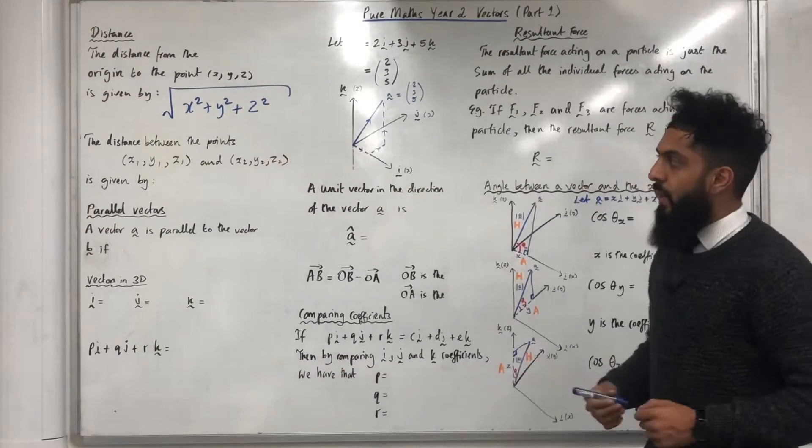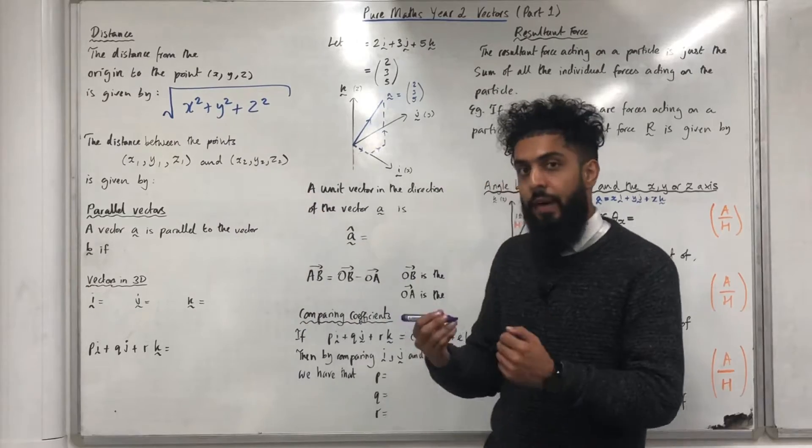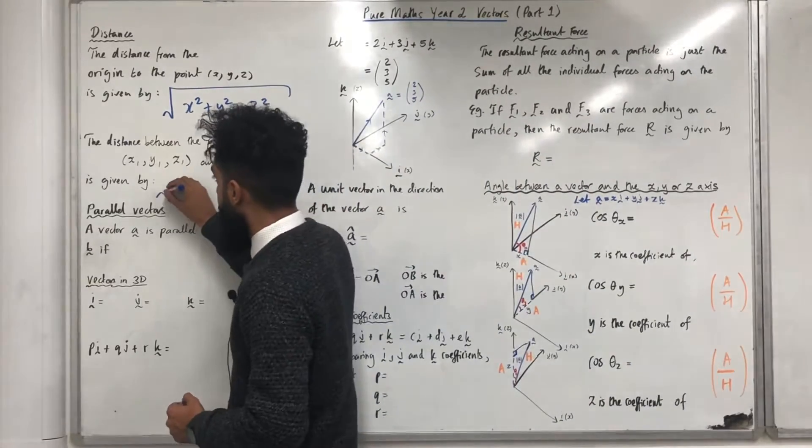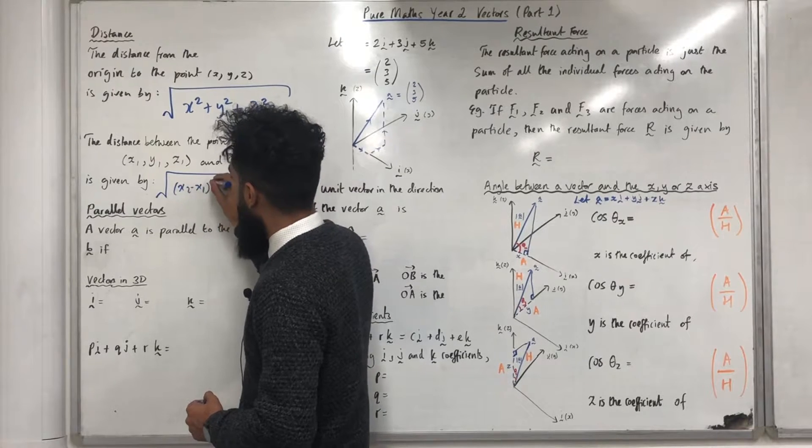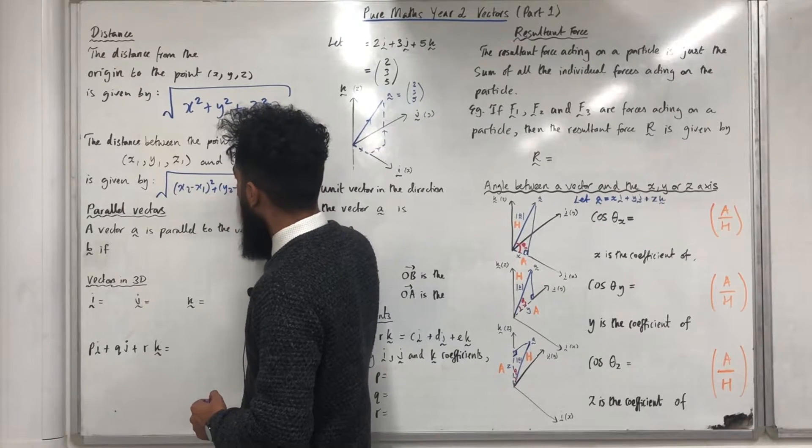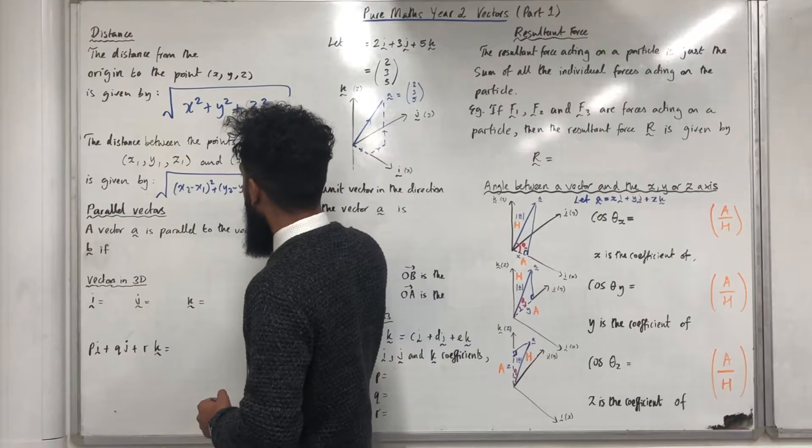The distance between the points x1, y1, z1 and x2, y2, z2 is given by square root x2 minus x1 squared plus y2 minus y1 squared plus z2 minus z1 squared.